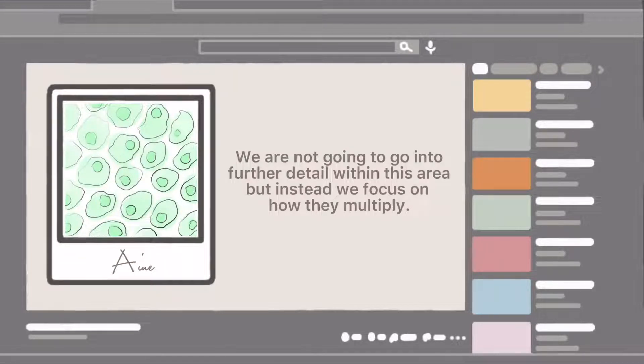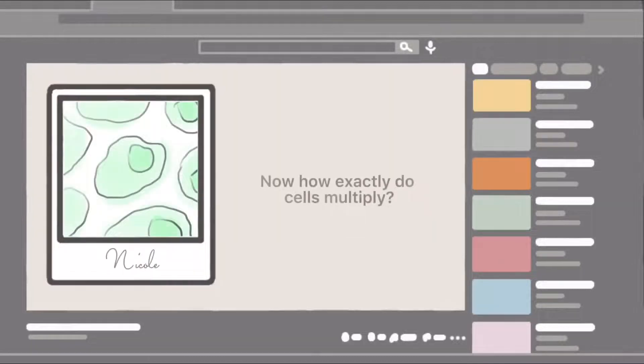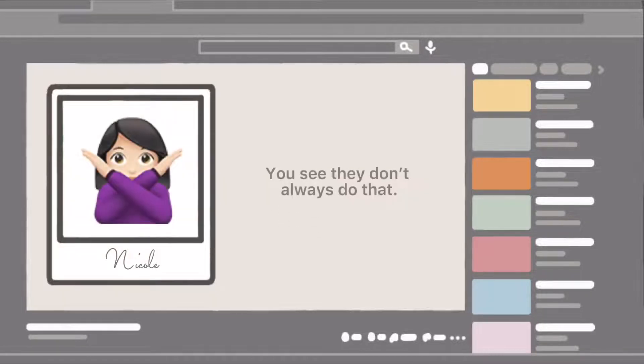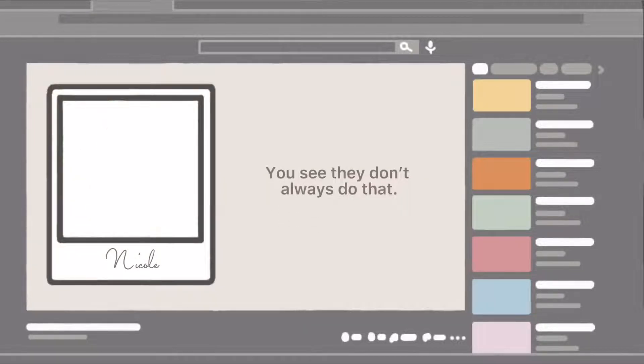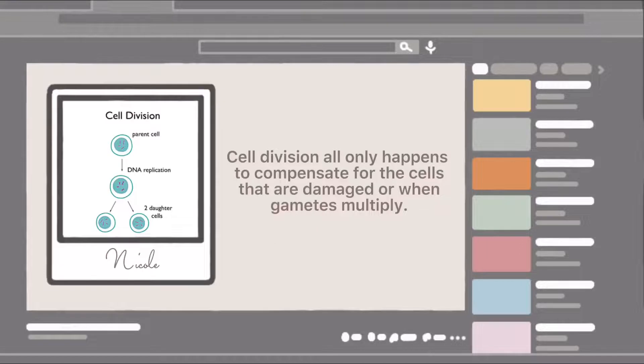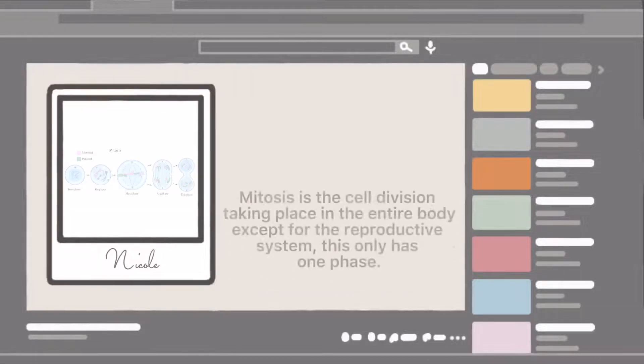We are not going to go further in detail within this area, but instead we focus on how they multiply. Now how exactly do cells multiply? You see, they don't always do that. Cell division all only happens to compensate for the cells that are damaged or when gametes multiply.